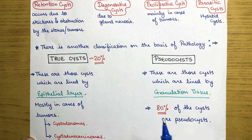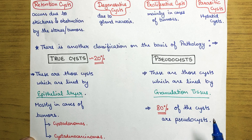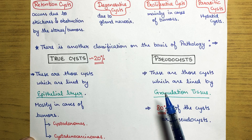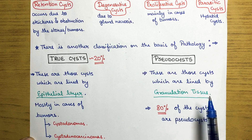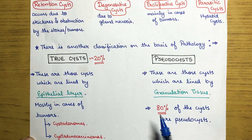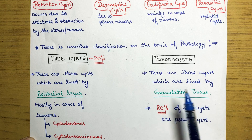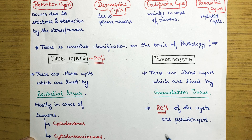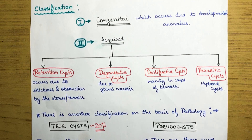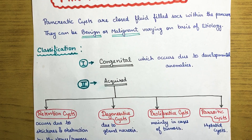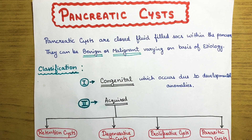Pseudo cysts are cysts which are not lined by any epithelial layer — they are lined instead by granulation tissue. In 80 percent of overall cyst cases, patients present with pseudo cysts. So this covers the full classification of pancreatic cysts.